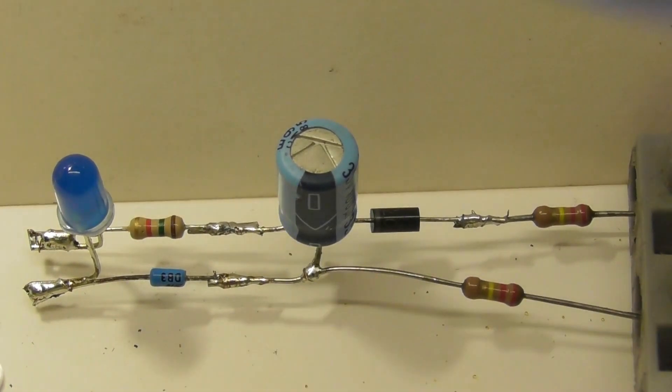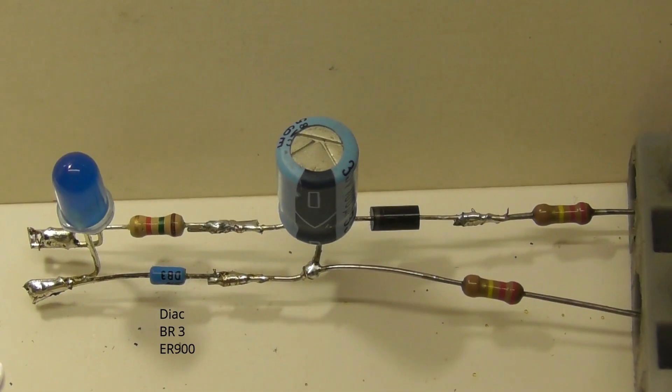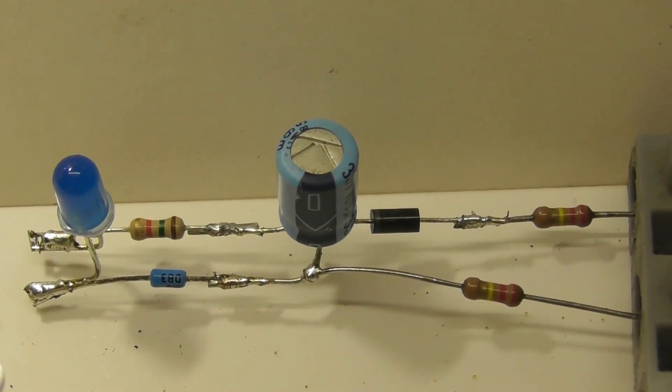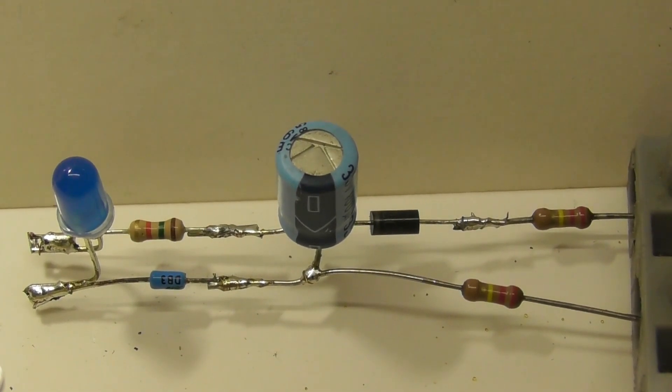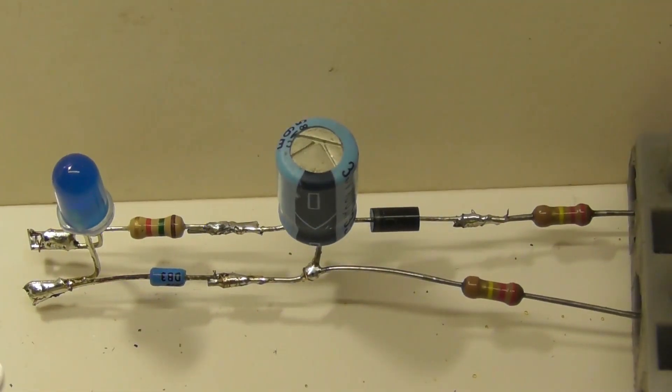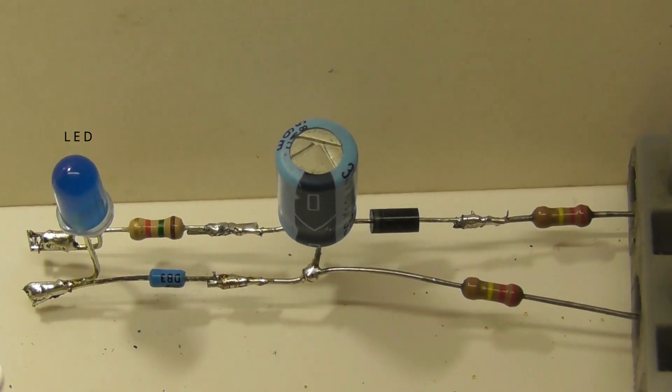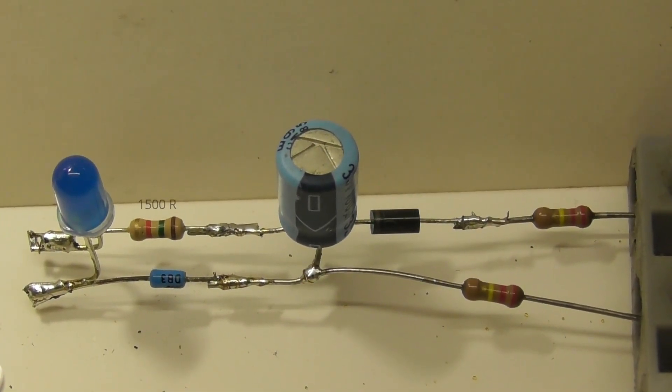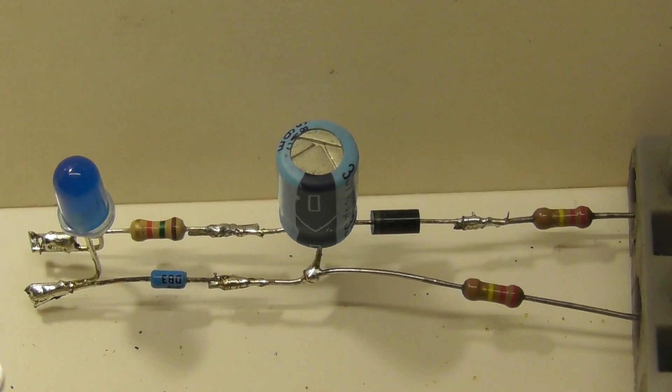The diac is a bi-directional breakdown diode, which breaks down at around 30 to 32 volts. That will set the capacitor value and it pulses for the LED. Series resistor to limit the current, so it doesn't damage the LED.